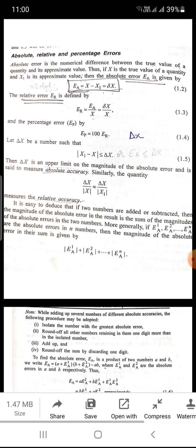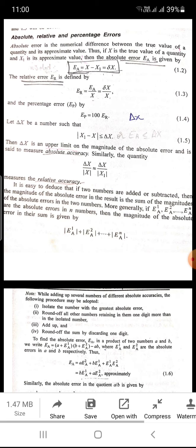And relative error will be er equals ea upon x, that is delta x upon x. And percentage error, suppose ep, will be given by ep equals 100 times er. Here, suppose delta x.